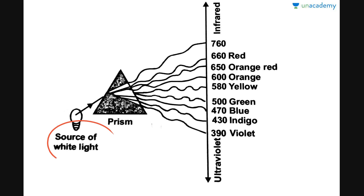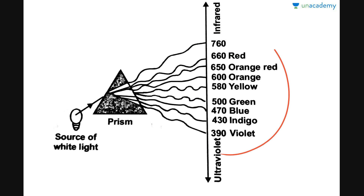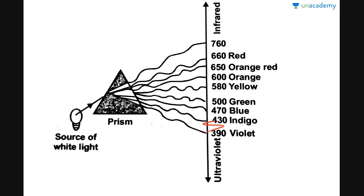When white light comes from the sun, it constitutes various wavelengths of light from 390 nm to 760 nm. This spectrum involving light from 390 nm to 760 nm constitutes the visible spectrum. Amongst this visible spectrum, the wavelength of light utilized for photosynthesis is about 400 nm to 700 nm, and this region is known as photosynthetically active radiation, or PAR, part of the visible spectrum.